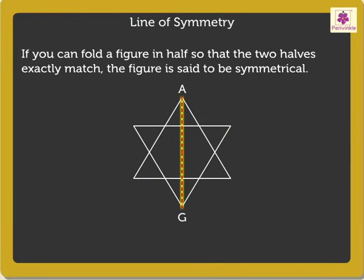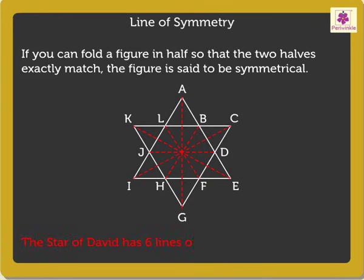Here, Line AG is one such Line of Symmetry. The others are Line BH, Line CI, Line DJ, Line EK, and Line FL. Thus, we say that the Star of David has six lines of symmetry.